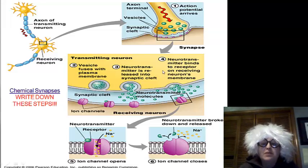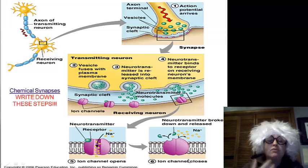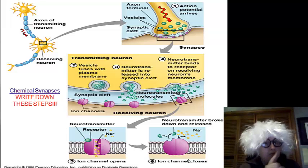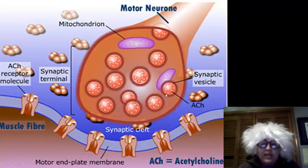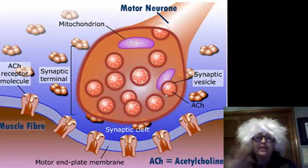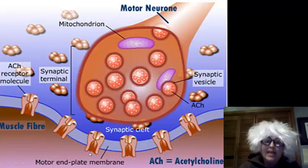Number four, the neurotransmitters bind to the receptors on the neuron membrane or the next cell, and then they are allowed in. The ion channel opens and then the ion channel closes. You might want to write these steps down. Again, another look at a chemical synapse: we have synaptic vesicles that contain neurotransmitters. They fuse and the neurotransmitters are released and can be picked up by the neurotransmitter receptors on the next cell.